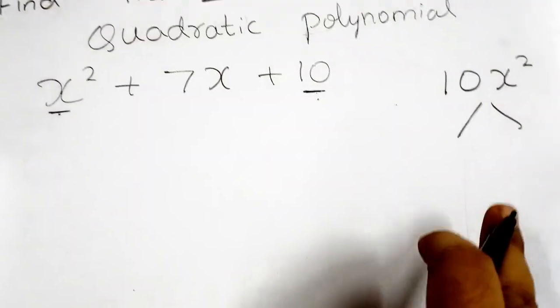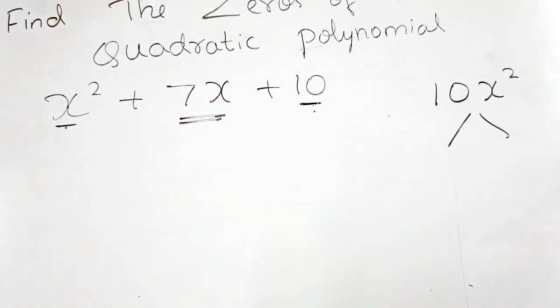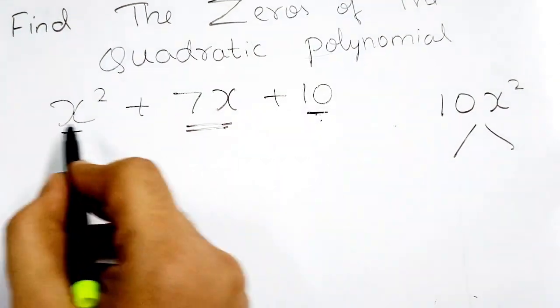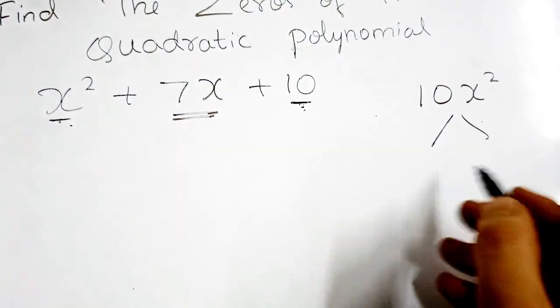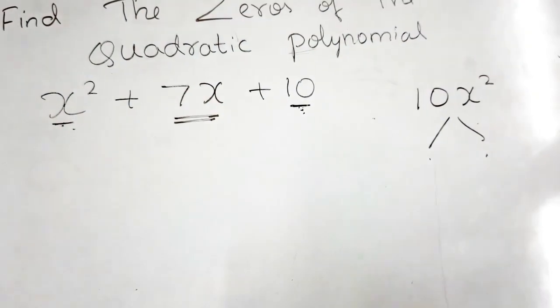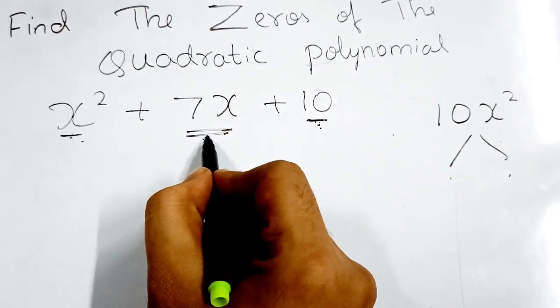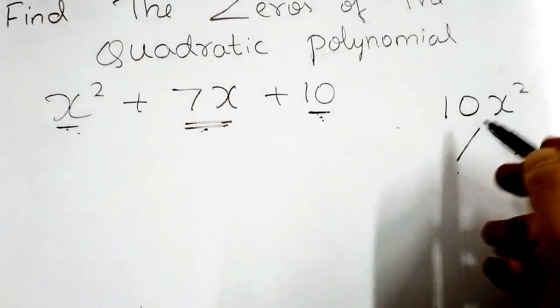Here what is there? 10. Here first number is x². 10 into x² equals 10x². We have to split this into two numbers such that we should get the middle number as 7x. First number, last number multiply: 10x². Split in two numbers such that if we add or subtract, we should get 7x, the middle term.